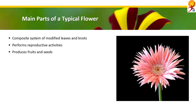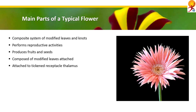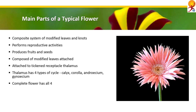Usually a flower is composed of four modified leaves which are attached to the thickened receptacle thalamus. This receptacle thalamus has four types of whorls: calyx, corolla, androecium, and gynoecium. The flower which has all four whorls is called a complete flower. If any whorl is absent then it is called an incomplete flower.